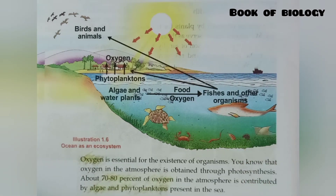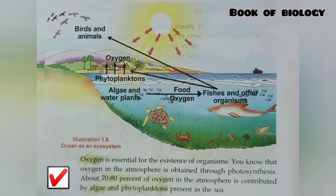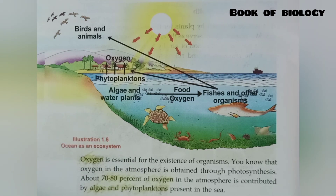Some amount of oxygen is also used by fishes and other organisms. That means about 70 to 80 percent of the oxygen in the atmosphere is contributed by algae and phytoplanktons present in the sea. So the ocean ecosystem is very important and we have to protect it.